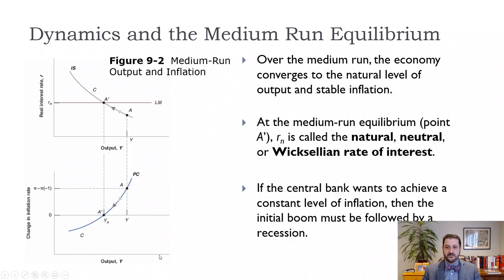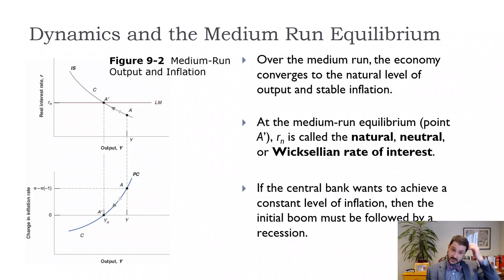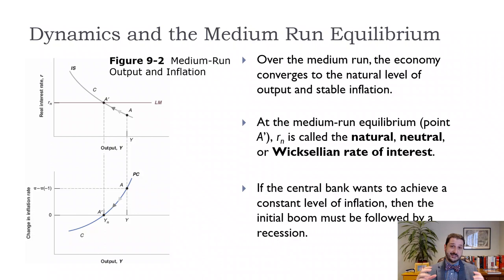This real interest rate associated with the natural level of output — we put a little 'n' in the subscript, as we did with output and the unemployment rate. It's sometimes referred to as the natural rate of interest, or the neutral rate of interest, or sometimes the Wicksellian rate of interest, named after the economist who talked about this. If the Federal Reserve is trying to figure out what the target policy rate is associated with constant inflation — the same level of inflation this year as last year — then they need to figure out what this natural rate of interest RN is.